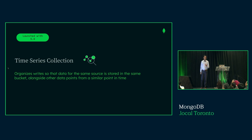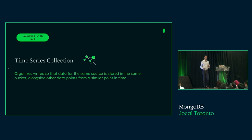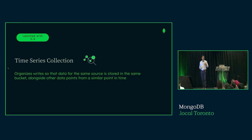We introduced a new type of collection called a time series collection. Within MongoDB, collections have always just been a collection where you can store any document. But the time series collection is a special type that organizes data by bucketing it by device metadata. This allows us to organize and group data more efficiently on disk, optimizes how indexes are created, and optimizes memory consumption — making it more seamless for developers to interact with time series data with the optimal data model.